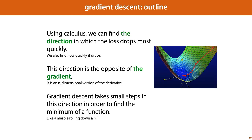So here's the outline again: using calculus, we can find the direction in which the loss drops most quickly — we call that the gradient — and gradient descent takes small steps in this direction in order to find the minimum of a function. You can think of this a little bit like a marble rolling down a hill.